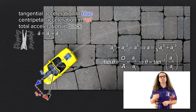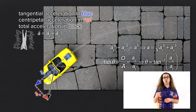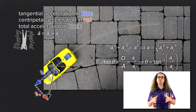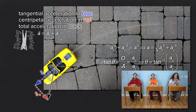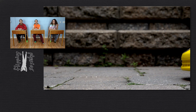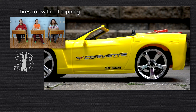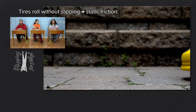Now let's look at the force causing the acceleration of the car. The only force acting on the car in the horizontal plane the car is moving in is the force of static friction. Bo asks: Static friction? The car is moving, so how can it be static friction? The tires are rolling without slipping, so it's static friction.